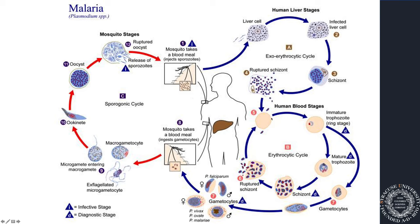In the blood stage, the parasites called merozoites infect red blood cells. One parasite goes into a red blood cell, develops, and produces lots of different parasites. It creates a schizont and it ruptures, creating a cycle where you're increasing the number of parasites exponentially.